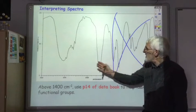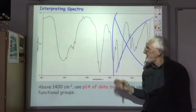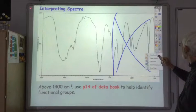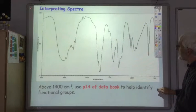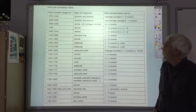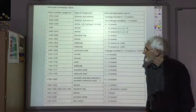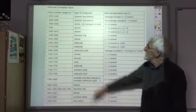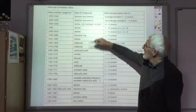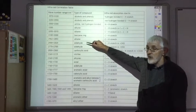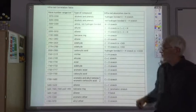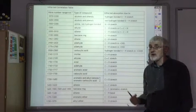So we've got two main peaks here. To find out what they might be due to, we look at page 14 of our data booklet — it's called the infrared correlation table. It's got three columns: the wave number in per centimetre, the type of compound which might give rise to a peak in that area, and the actual bond which is bending or stretching to cause that peak.